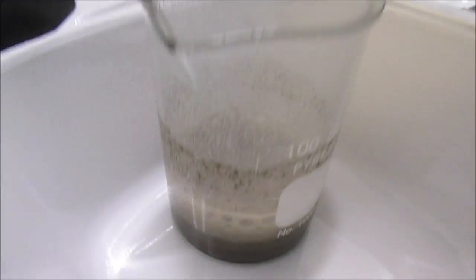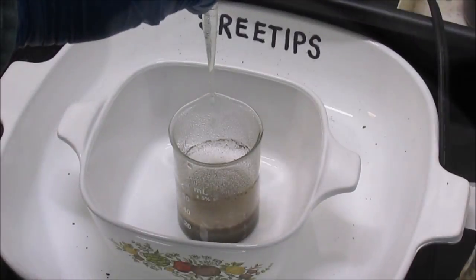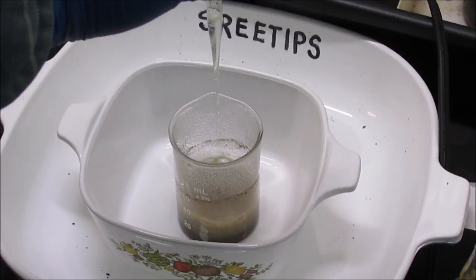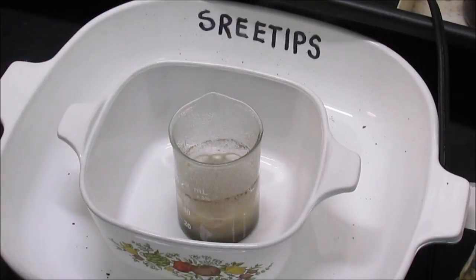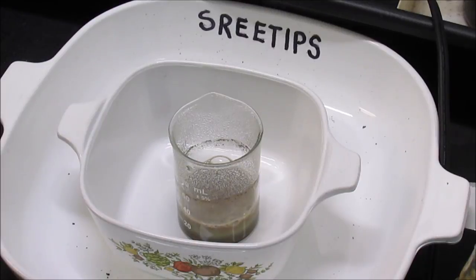Piranha solution is normally made by mixing three parts concentrated sulfuric acid with one part 30% hydrogen peroxide. But this 12% is all I had, so I'm using that. This is some nasty stuff and will dissolve skin on contact, so precautions must be taken to ensure that none of it gets on you.